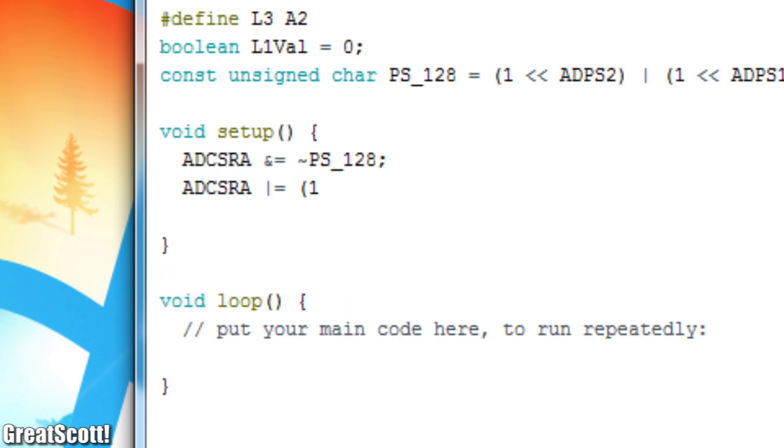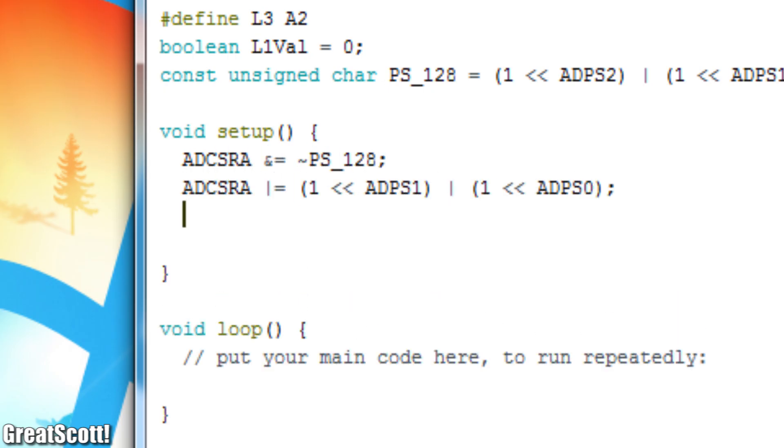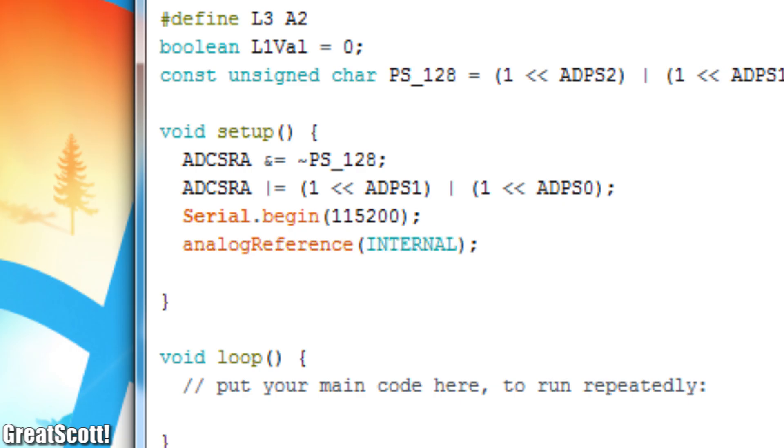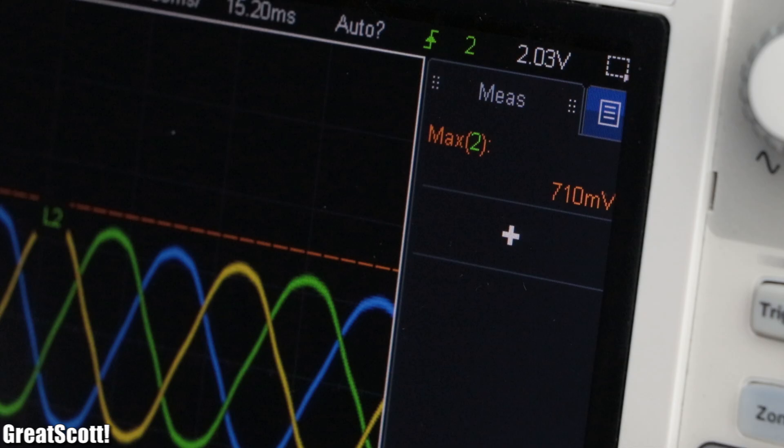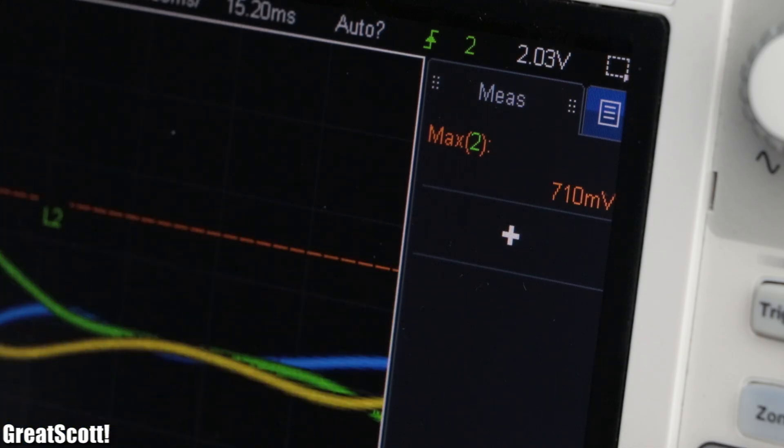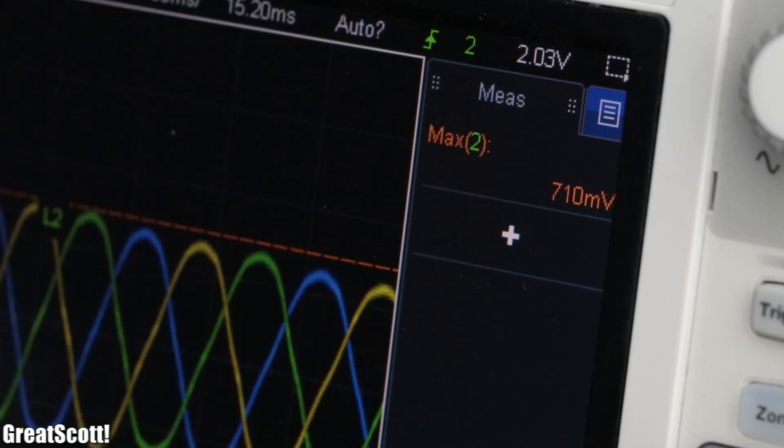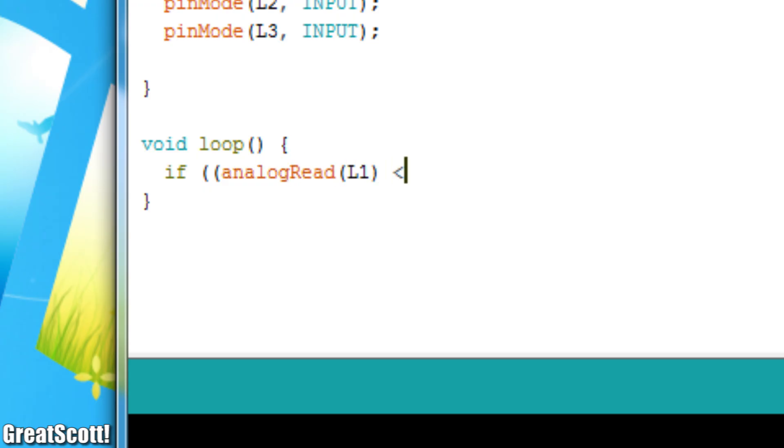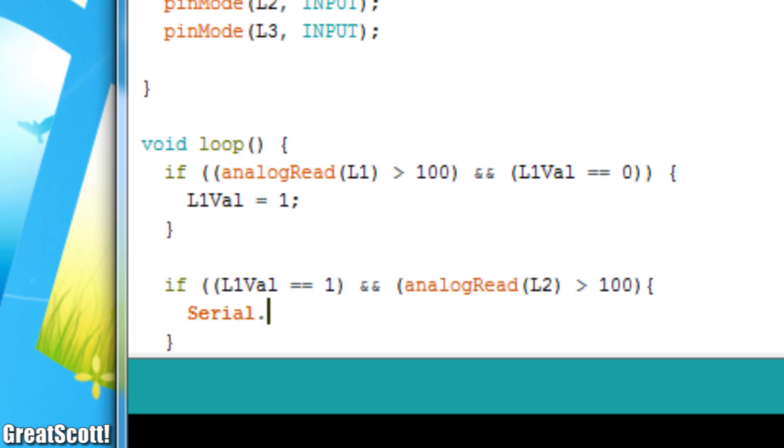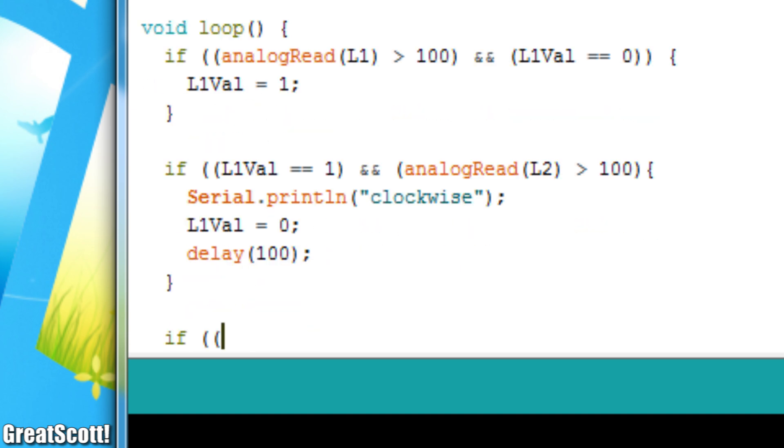For starters I sped up the ADC of the Arduino and set the analog reference voltage to the internal 1.1 volts, since the induced voltages of the motor never reached above this value. Then I wrote a simple piece of code which checks if the L1 voltage is induced, and if so also checks continuously alternating whether L2 or L3 is the next induced voltage.